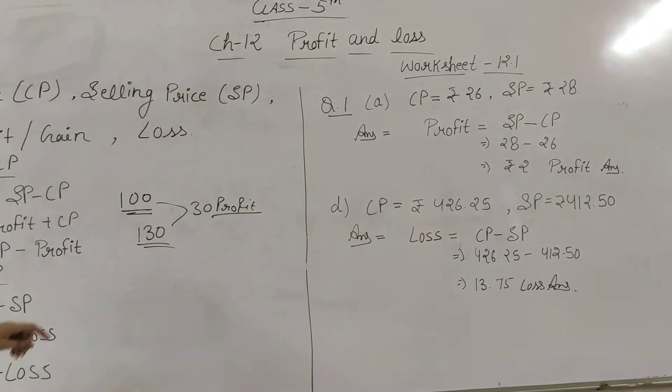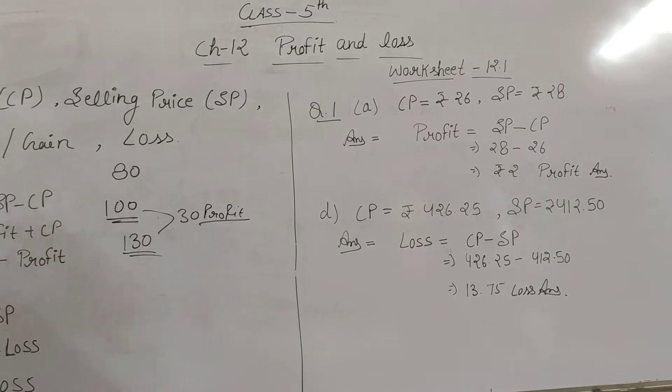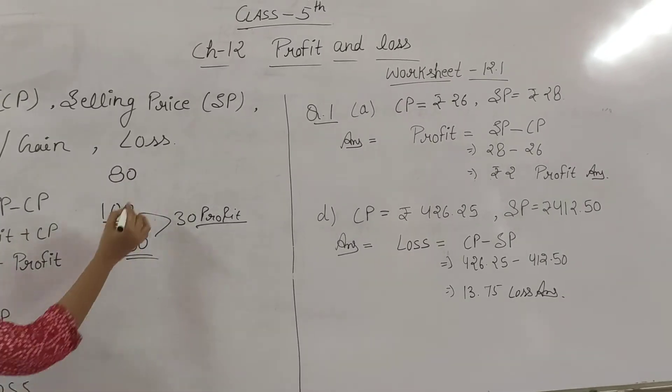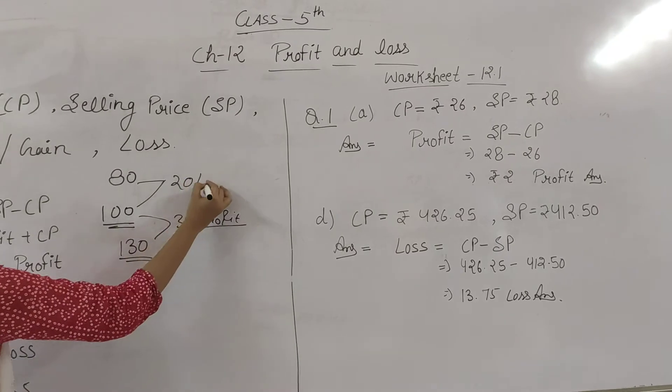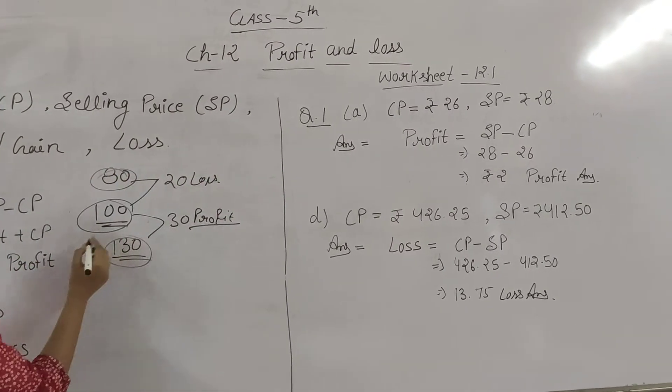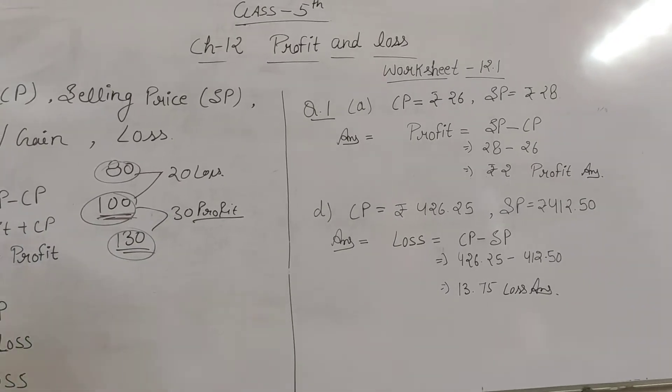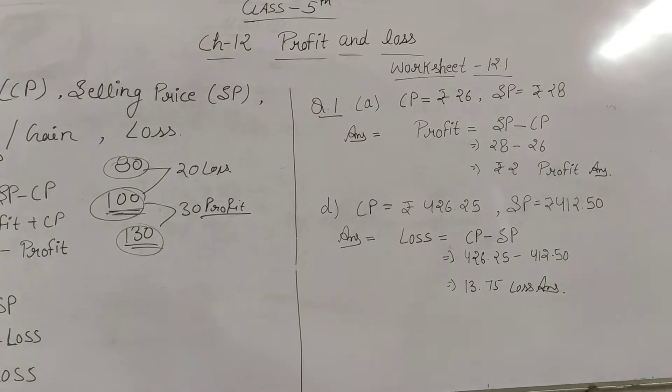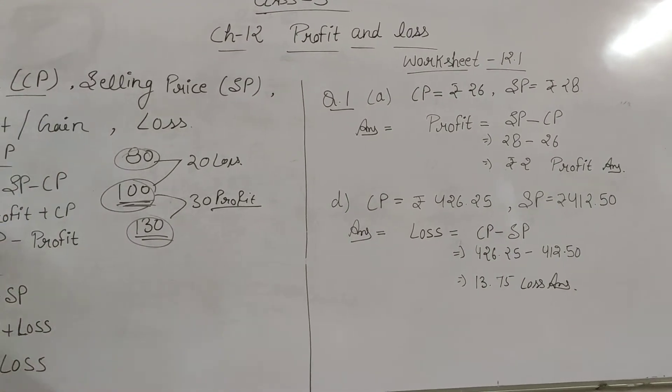If you buy something for 100 rupees and sell it for 80 rupees, you lose 20 rupees. We need to understand this difference. The price at which you buy is called the Cost Price, abbreviated as CP.